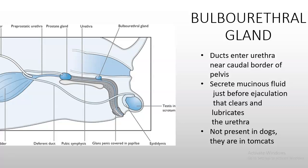The bulbourethral gland is a tiny gland not present in dogs — only in cats. Its ducts enter the urethra near the caudal border of the pelvis. Its function is to secrete mucinous fluid just before ejaculation, clearing and lubricating the urethra so it's clear for the ejaculate to pass through toward the female reproductive system.